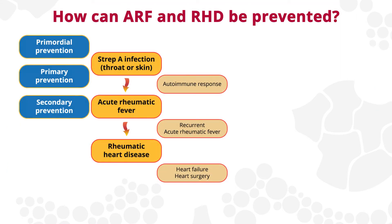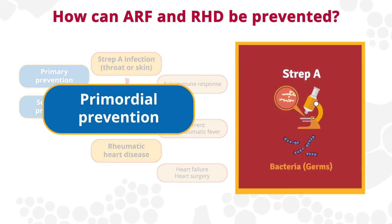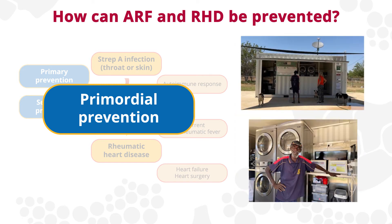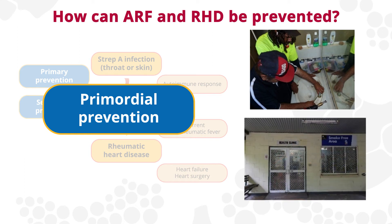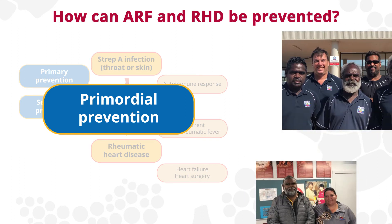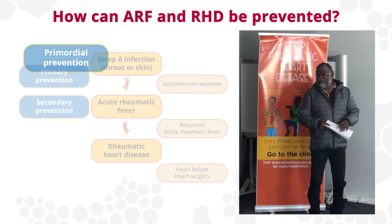There are opportunities to prevent ARF and RHD along the disease pathway. Primordial prevention aims to reduce the risk of strep A infections and is related to the social determinants of health. This includes healthy housing and sanitation, reduced household crowding, and reliable access to washing facilities and health services. In some communities, environmental health officers support these healthy environments.